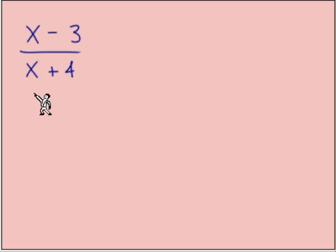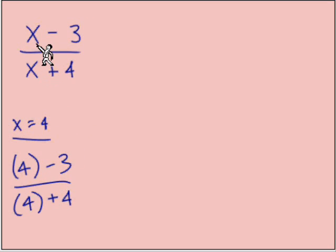Let's work in this other idea where we'll get the same result evaluating an expression before it's simplified as we would after it's simplified. Evaluating this expression when x equals 4 will give us 4 minus 3 over 4 plus 4. That's 1 eighth.